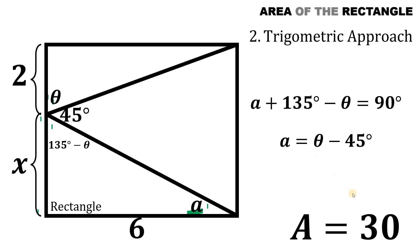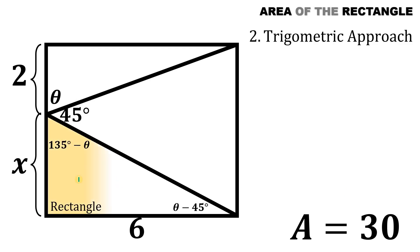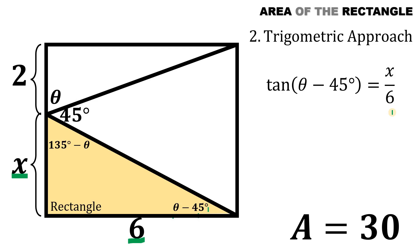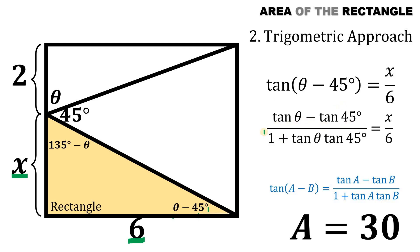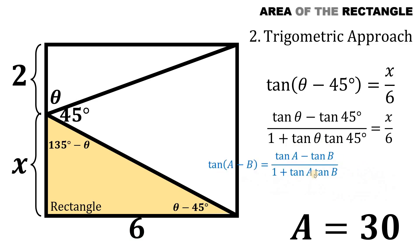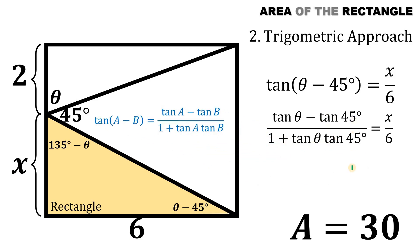We can replace a with (theta − 45°). Focusing on this right triangle, we get the tangent of (theta − 45°) equal to the opposite over adjacent, which is x over 6. Using the tangent subtraction identity: tan(A − B) = (tan A − tan B) / (1 + tan A · tan B), the left side becomes (tan θ − tan 45°) / (1 + tan θ · tan 45°). Since tan 45° = 1, this simplifies to (tan θ − 1) / (1 + tan θ).